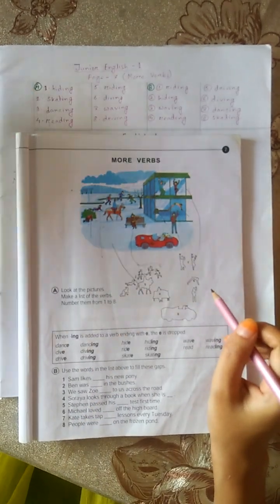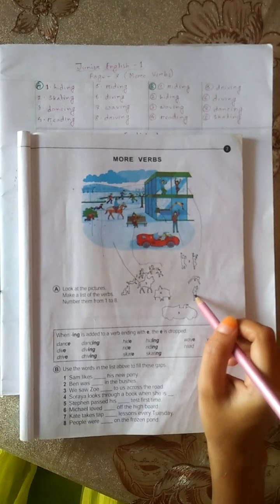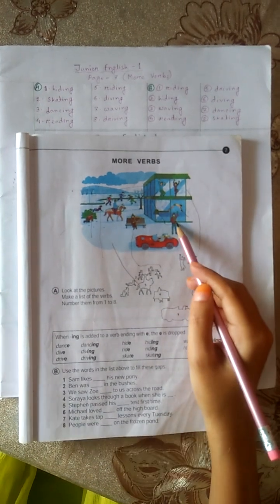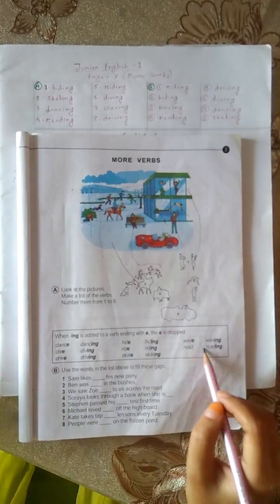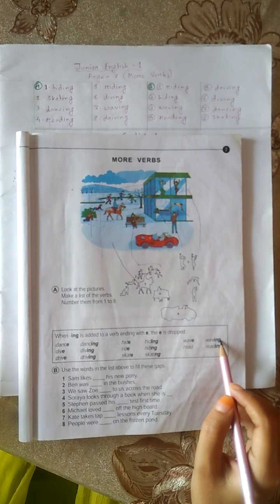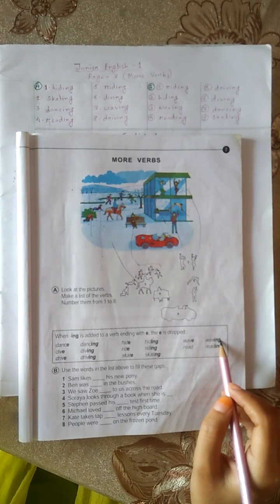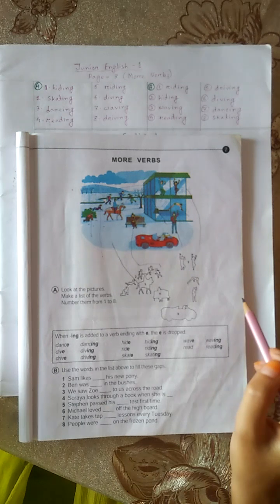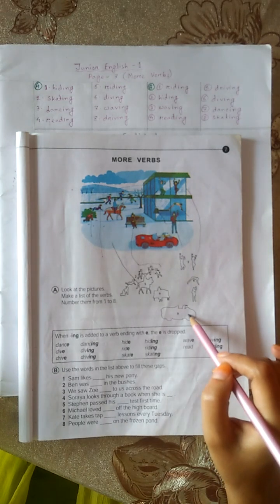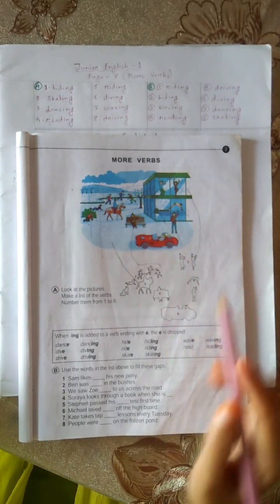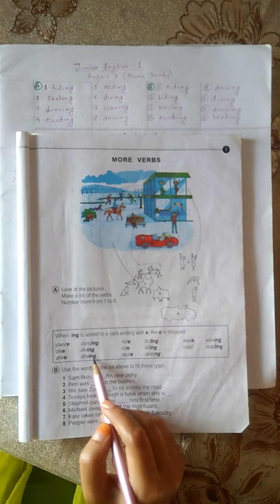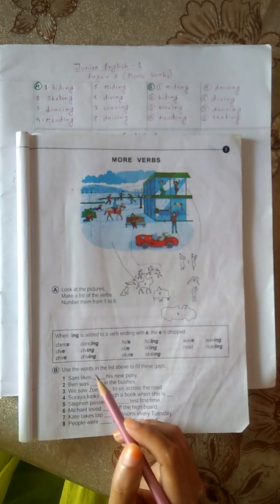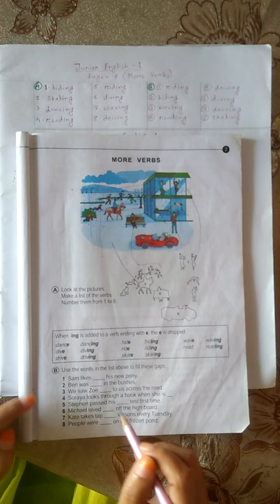7. Waving, W-A-V-I-N-G, waving. 8. Number 8, driving. D-R-I-V-I-N-G. Next exercise.